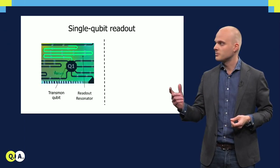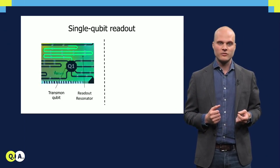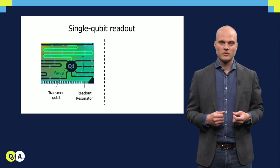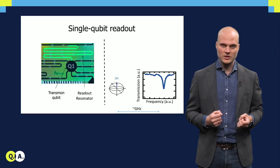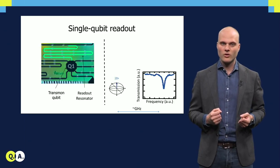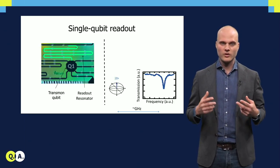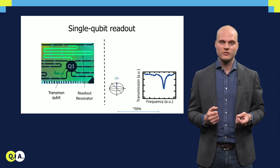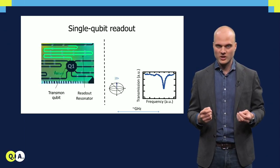A transmon qubit can be measured via a readout resonator that is coupled to it. The resonance frequency of the resonator is quite far away from the qubit transition frequency, on the order of gigahertz. However, due to the coupling there is a shift in the resonator's frequency depending on the qubit state.